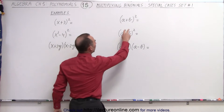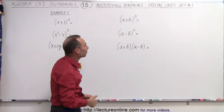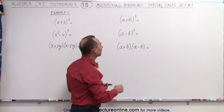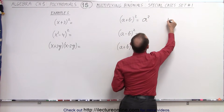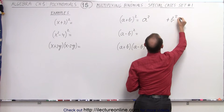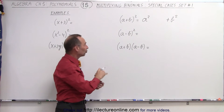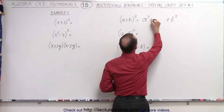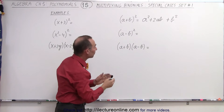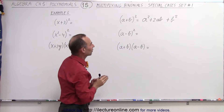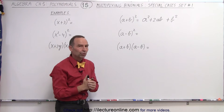So, if we have a binomial like a plus b and we square that, it's essentially a plus b times a plus b. The result is the first term squared plus the last term squared, plus twice the product of the two terms — so a times b times 2 gives us 2ab. You can very quickly come up with a solution by writing the square of the first term, the square of the last term, and then the product of the two terms multiplied by 2.